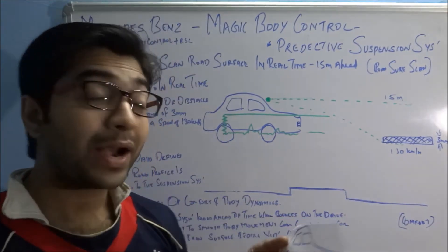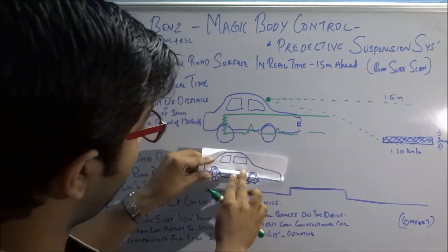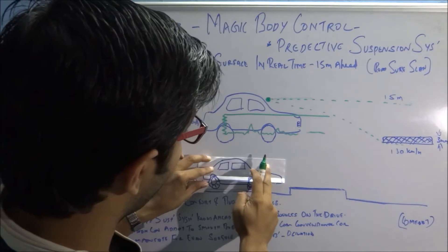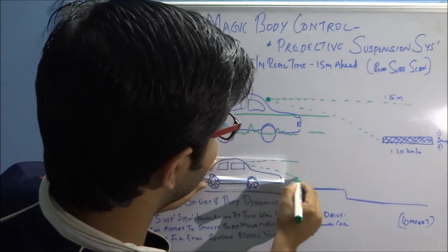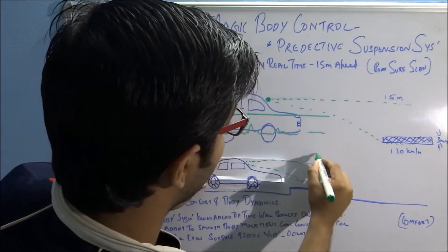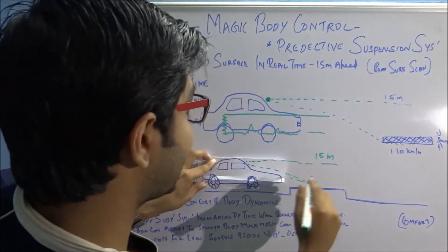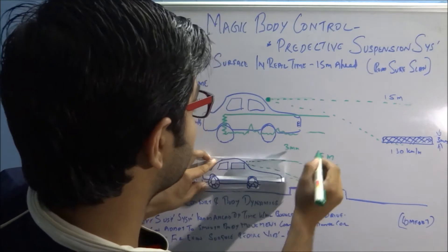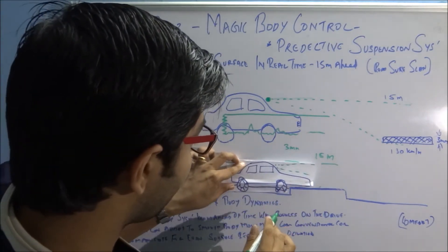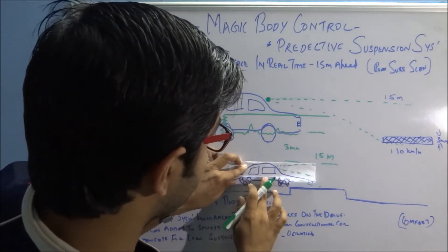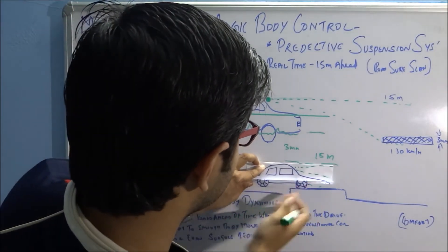Now what happens with magic body control? When we have magic body control, the vehicle has a camera over here which can sense the road surface. This can scan the road surface for about 15 meters and at a tolerance of about 3 millimeters. What happens is that it senses it, and when the wheel comes over here, instead of climbing, the suspension actually moves like this. You can see it moves like this, the tires go inside and the body doesn't move.